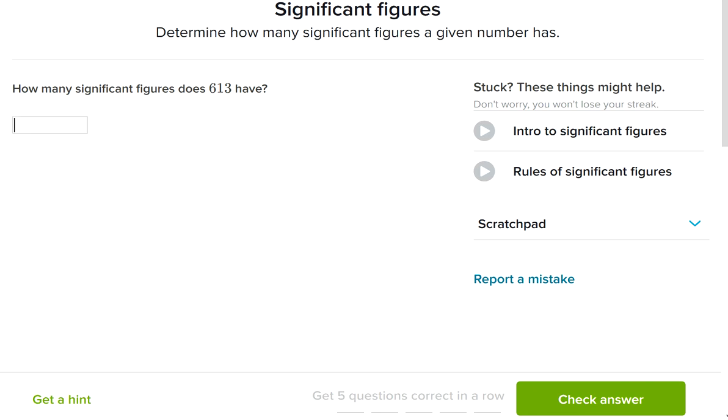So here we have this question, how many significant figures does 613 have? Now here you have three numbers, and every single one of them is important. So I have three significant figures, or three significant digits.